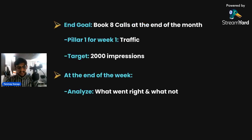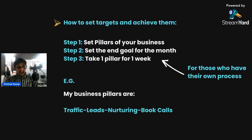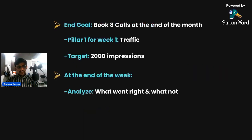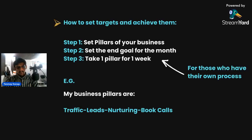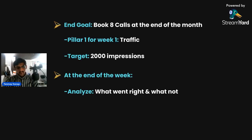Once you set the pillars, set the end goal. In our case, the end goal can be: book eight calls at the end of the month. To achieve that, take one pillar per week and go all in. Pillar one is traffic. Let's say we set the target for pillar one — traffic — as 2,000 impressions for the week. At the end of the week, analyze what went right and what didn't.